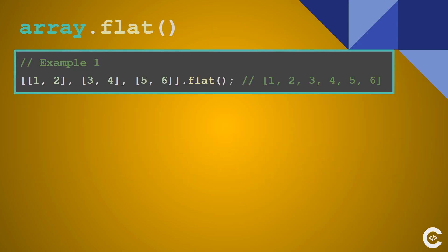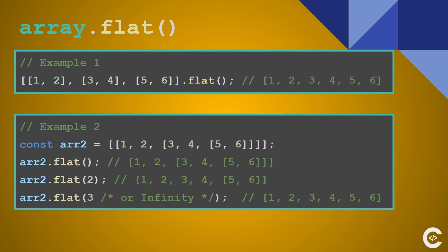To make an array flat there is a better method added in a recent version of ES — I think ES9. The method is called flat. If you don't pass any argument it will pull elements out of the first sub-array — that's the flat nesting level of one. On the example where we pass two, we are flattening two sub-levels. If you want to make the array fully flat you need to pass Infinity or a sufficiently high number.